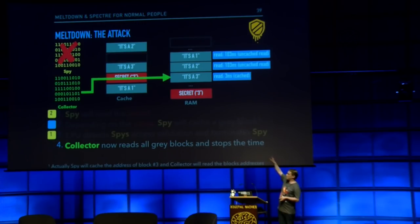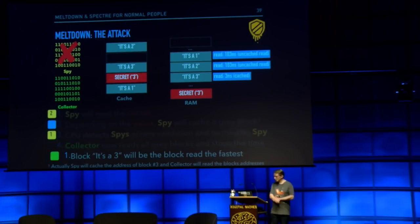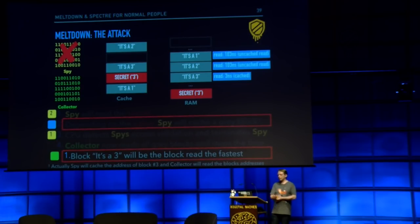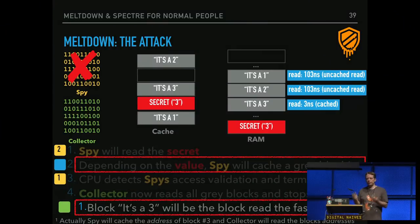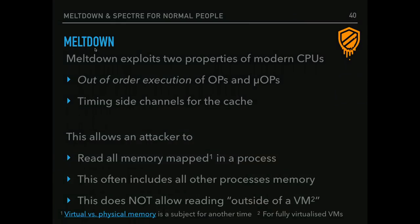So that is how Meltdown works. If you think about this, it is very easy — it is not a difficult attack. But the super-scalar processors enable that kind of attack. Intel introduced them with the Pentium back in the 90s. Quick summary: Meltdown uses out-of-order execution of micro-operations and a side-channel attack via the cache. This allows the attacker to read all the kernel memory, which often includes all the memory of other processes. But the important point is this does not include the memory of the hypervisor or other VMs.